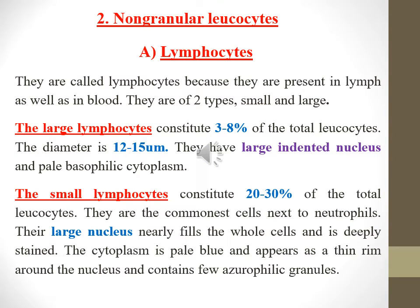Non-granular lymphocytes are called lymphocytes because they are present in lymph as well as in blood. They are of two types: small and large. The large lymphocytes constitute 3 to 8 percent of the total leukocytic count, with a diameter of 12 to 15 micrometers. They have a large indented nucleus and basophilic cytoplasm.